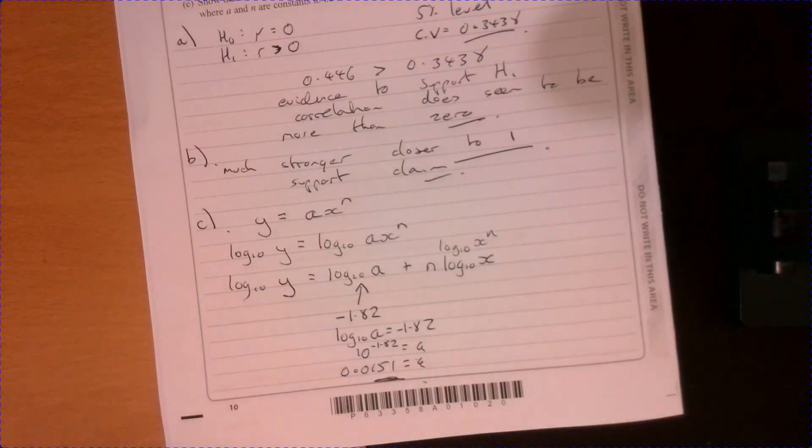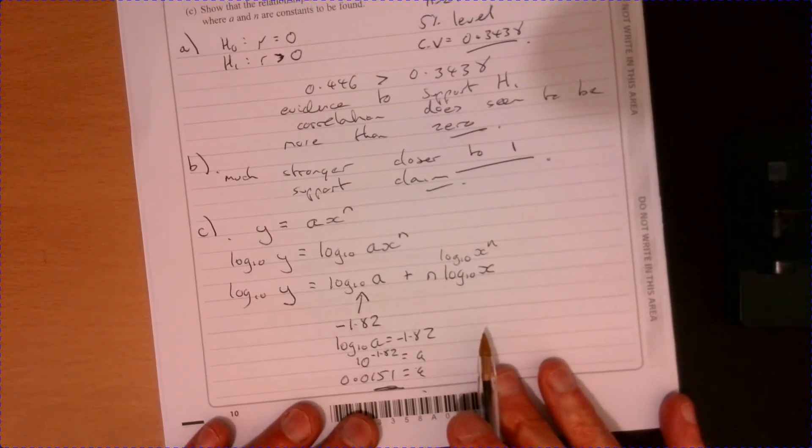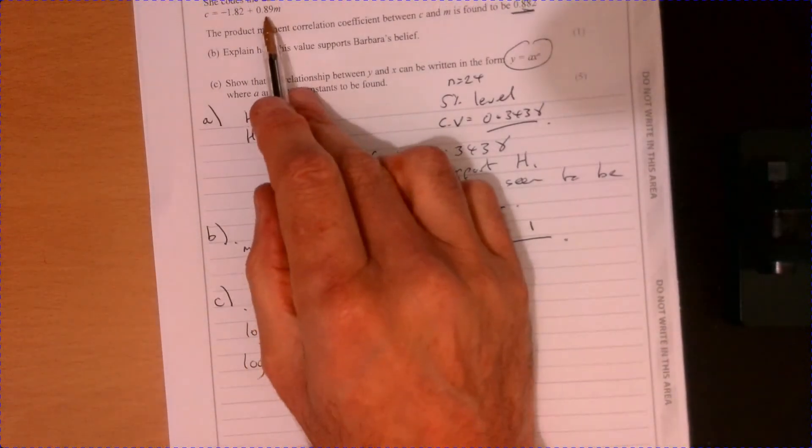which is equal to 0.0151. So we got what the A part is. Now, again, just have a look and see what we've actually been told.